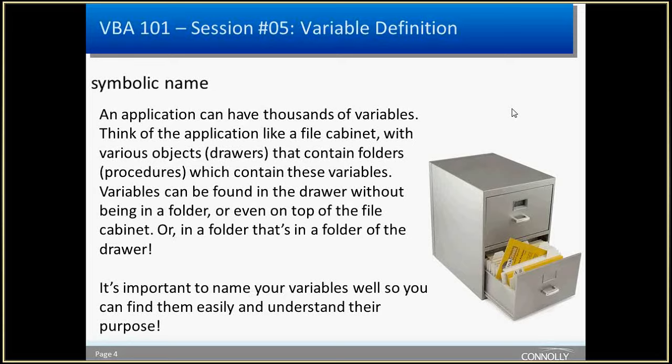The application can have variables on top of the file cabinet that everybody can reach — globals. I think it's a good word picture to help understand scoping. Because you can have all these things all over the place, it's really important to name your variables well, so that you or somebody else who comes along after you can find them and understand what they're for.